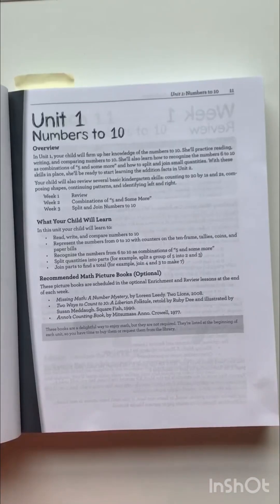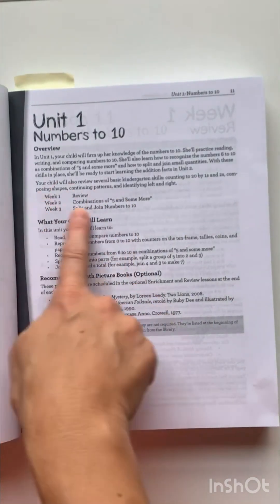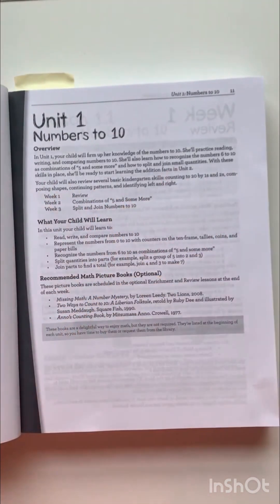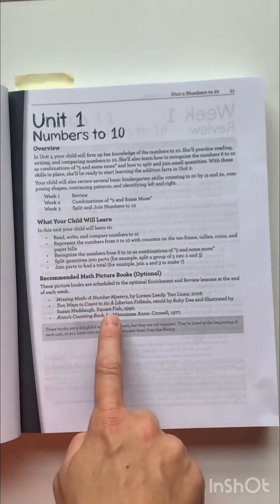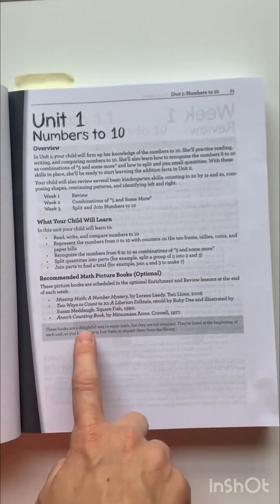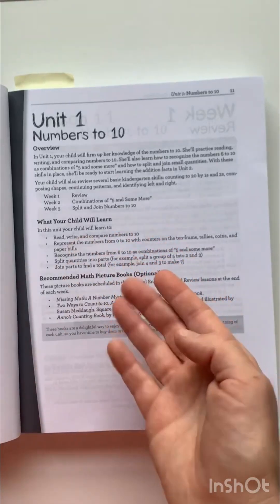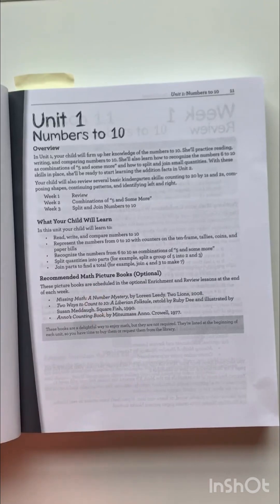Let's take a look at a unit. This is unit one. It starts with an overview. You'll see she puts it into weeks. I don't really pay attention to that right now because I'm moving at the pace of my daughter and we've been able to move through this first part pretty quickly. But that is there. You'll see what the child learns. And I love this recommended math picture books. Notice these are optional, but this is a great thing to do if you want to put these on hold at your library. She does have quite a few for each unit.